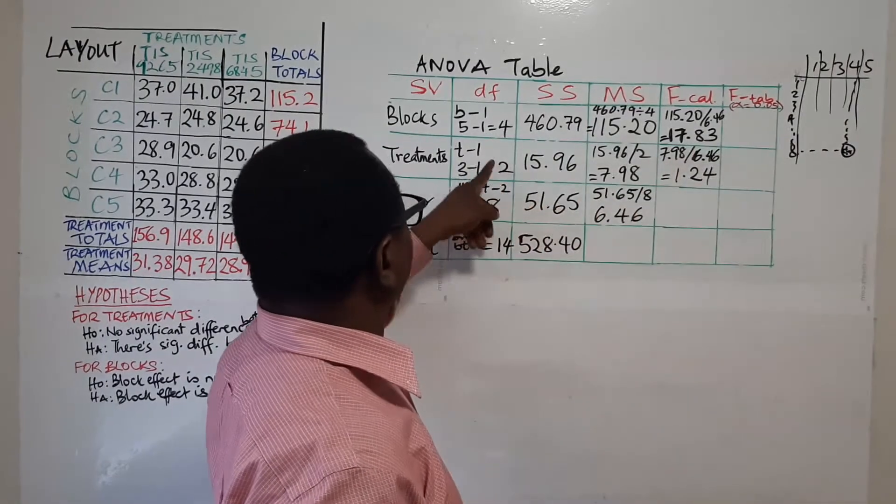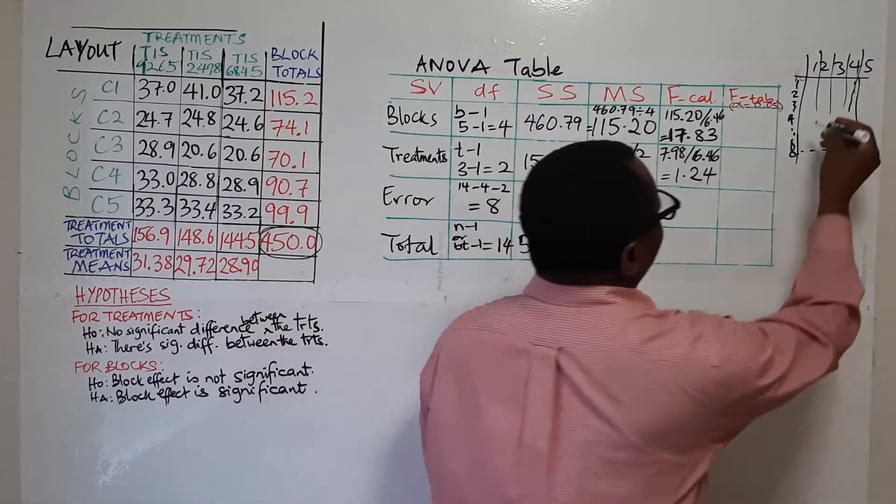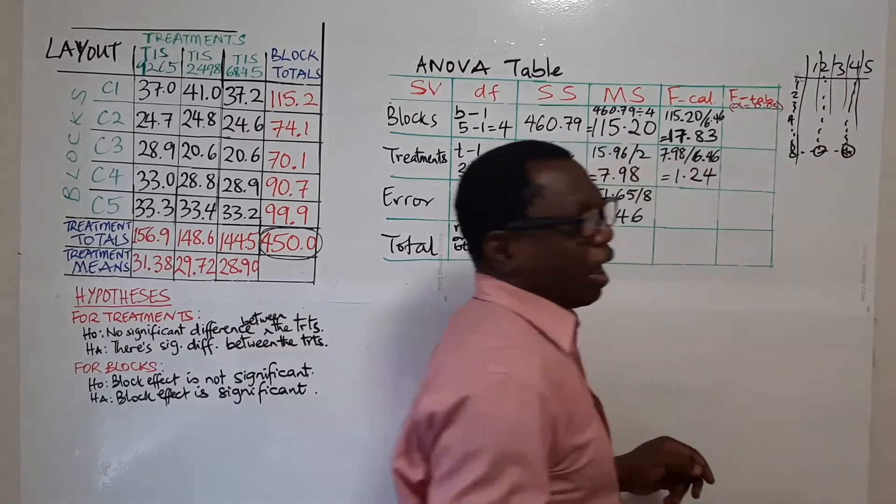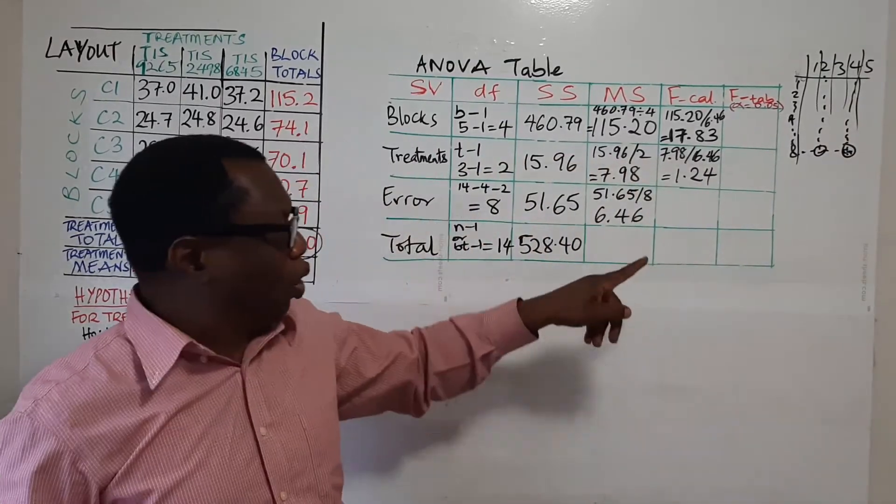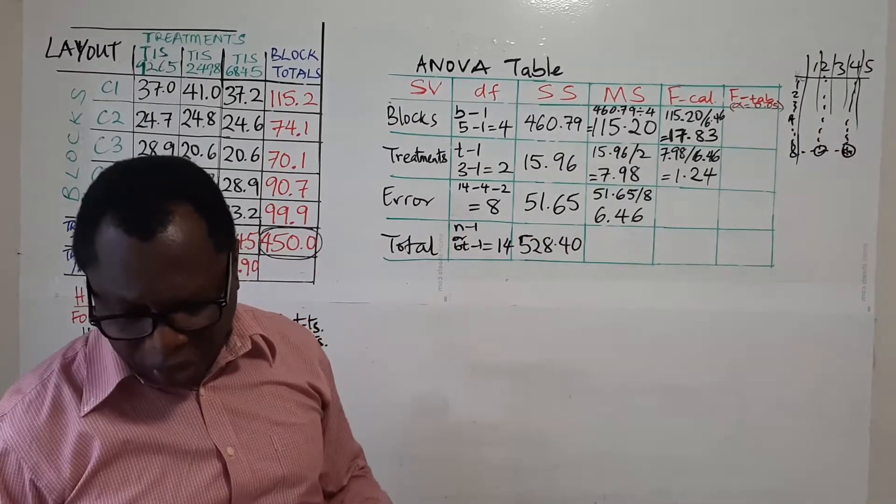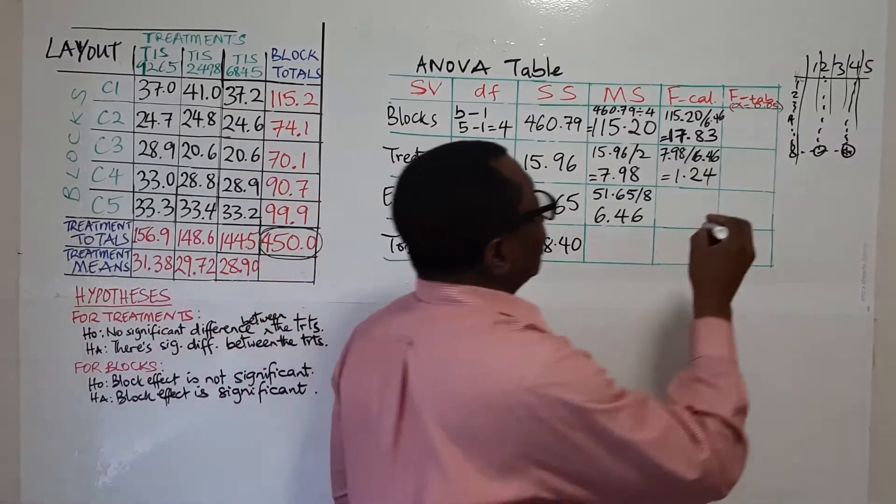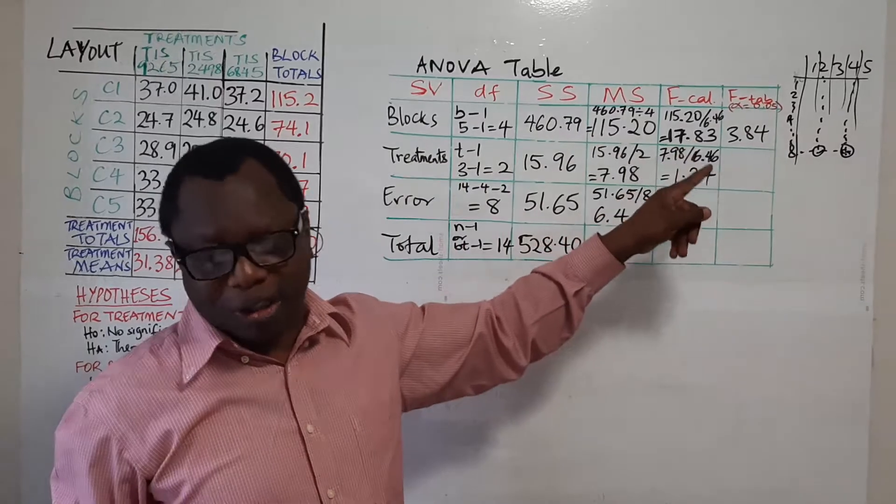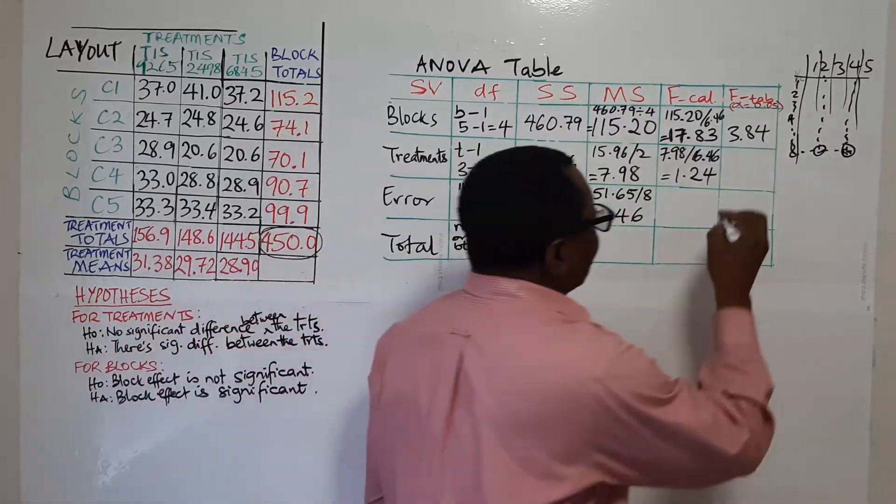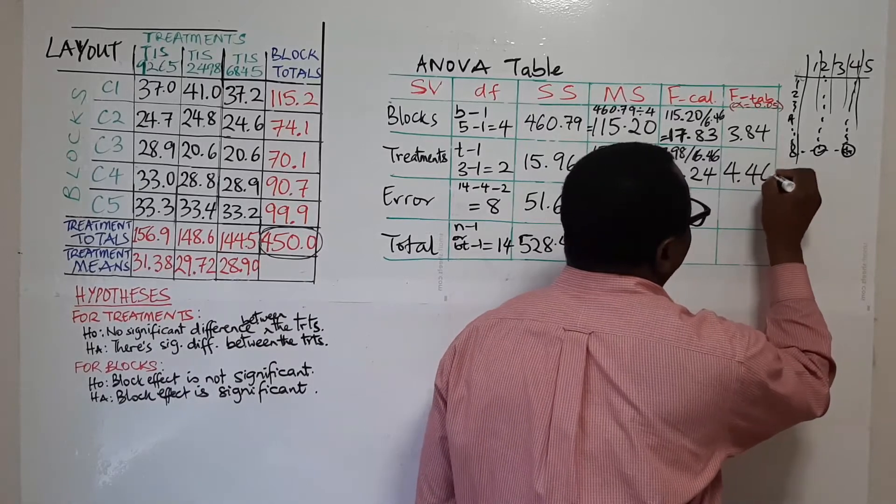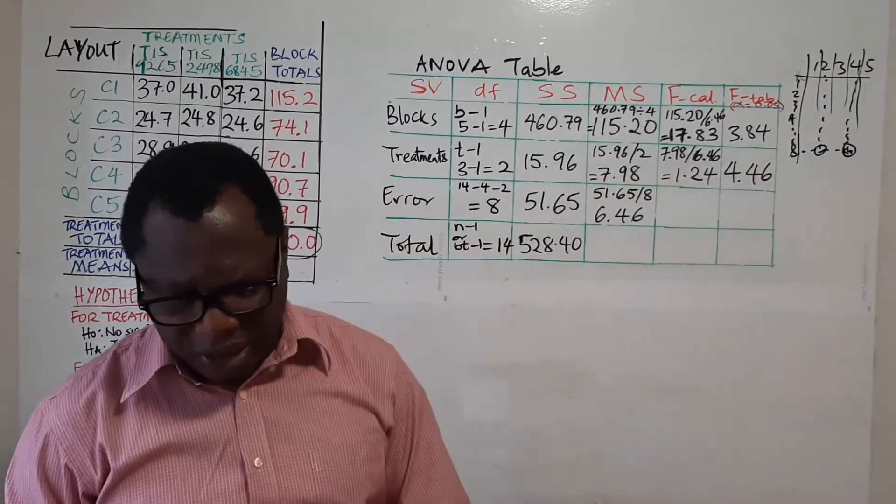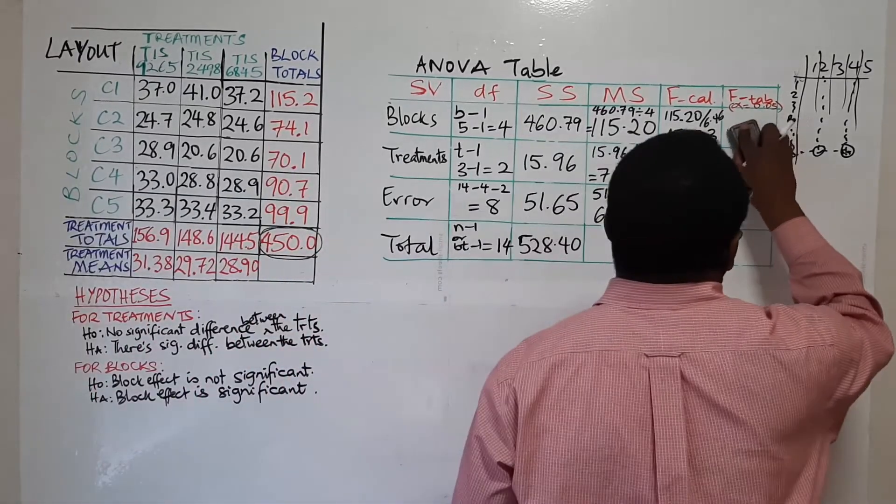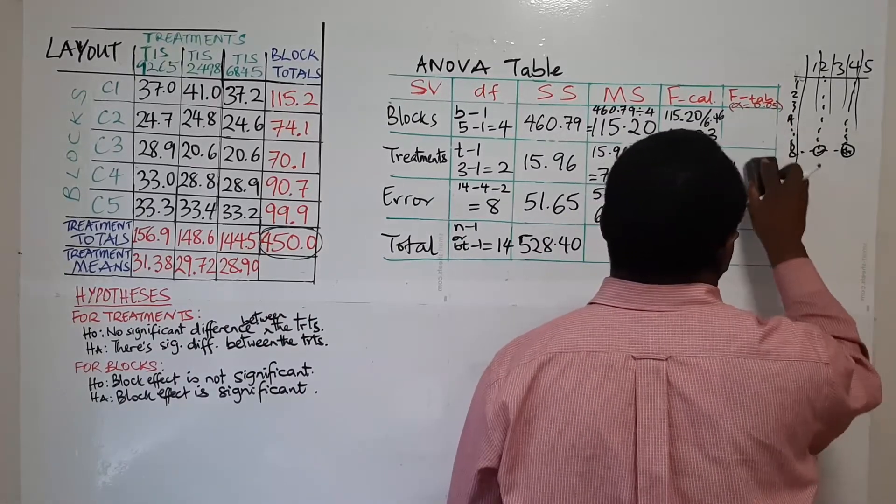And for the second one, it will be 2 and 8 for treatments. So it will be 8 under 2. So whatever value is there, that's what you will use. And when you go to the table to look at that, what you will get is 3.84 for blocks and for treatments, you will get 4.46.